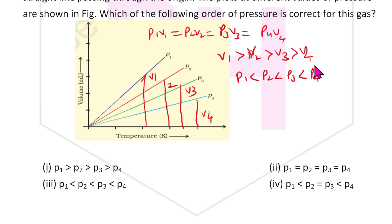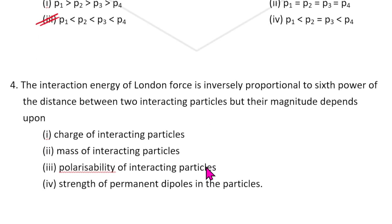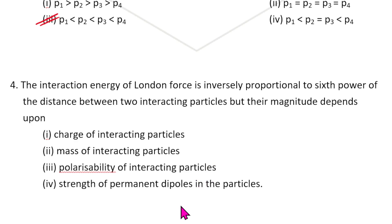So the answer for question 3 is P₁ < P₂ < P₃ < P₄. Question 4: The interaction energy of London forces is inversely proportional to the sixth power of distance between two interacting particles. Their magnitudes depend on the polarizability of the interacting particles — greater the polarizability, greater the magnitude of the interaction energy. The answer is the third option.